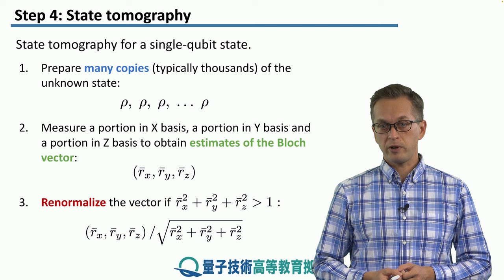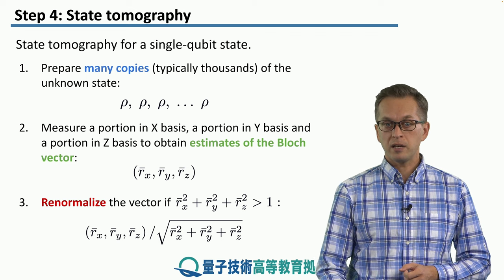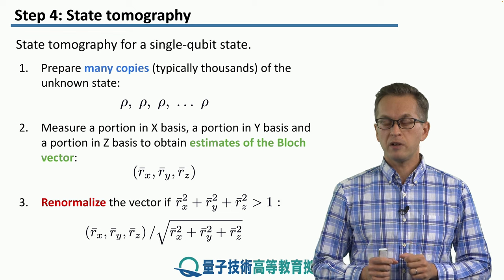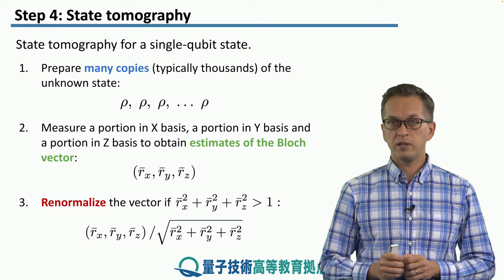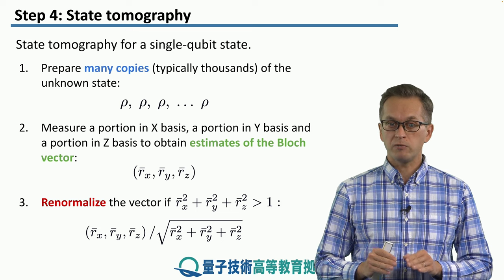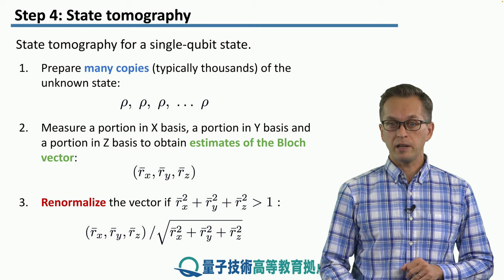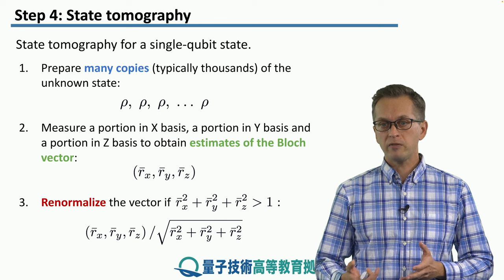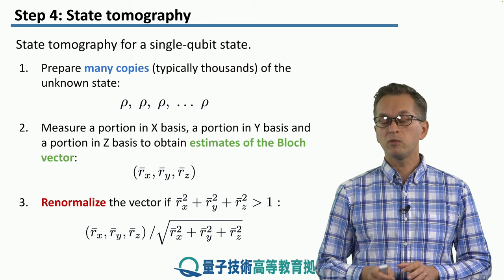And then finally, we check that the state is correctly normalized. Now, these estimates of the Bloch vector are not the actual values. Therefore, it may happen that the length of that vector is actually larger than one. If that happens, all we have to do is renormalize by dividing by the length of the vector given by these estimates. And if already it's less than one or equal to one, we leave it as it is.